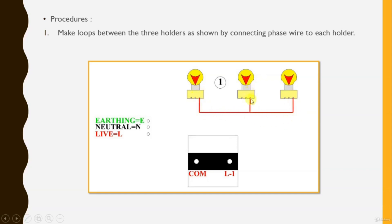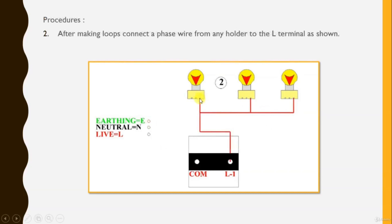Then we move to neutral wire, and finally we connect the com to the main supply. Now choose the nearest holder.